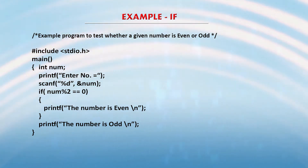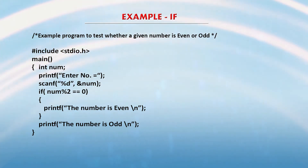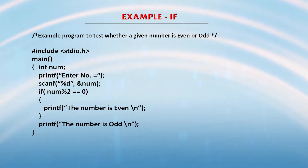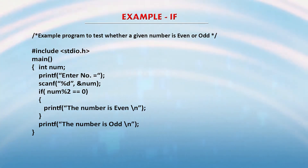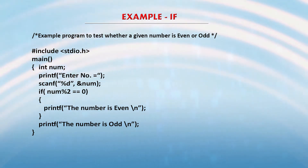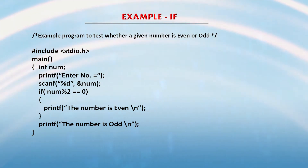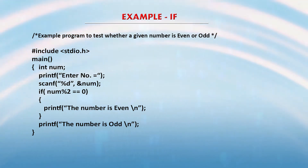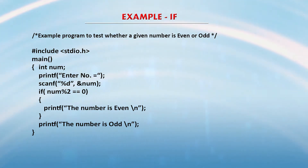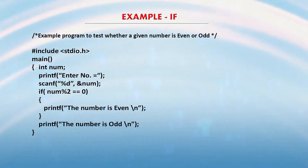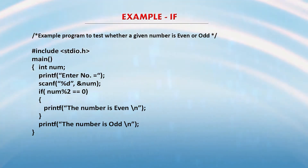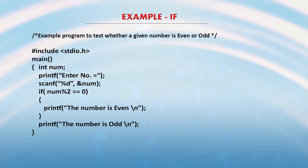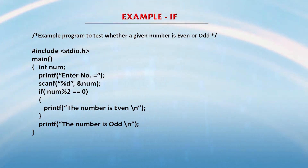You want the number to be entered by the user, so you need one variable. Since you want to check whether the number is even or odd, declare int num. To have interactivity, you print a message asking the user to enter the number. Then you use scanf with %d and &num — &num is the address of the variable num in memory, which stores the value entered by the user. Now, num % 2 — the percent operator gives the remainder when num is divided by 2. If the remainder is 0, the number is even; otherwise, the number is odd.